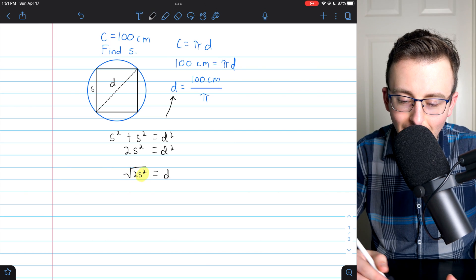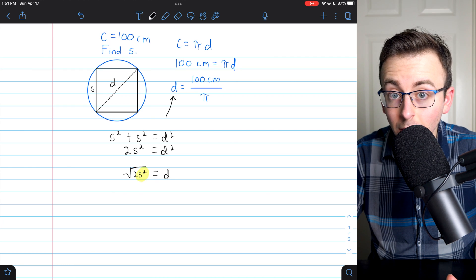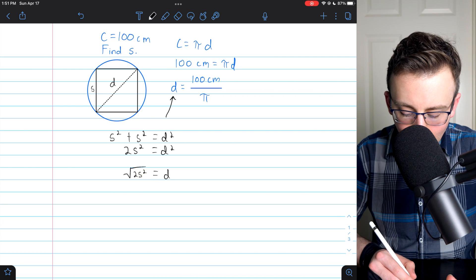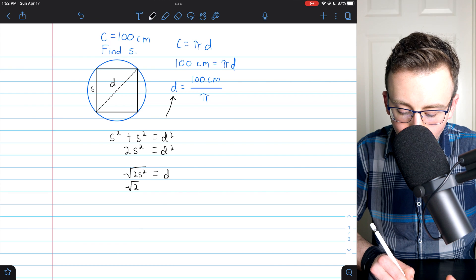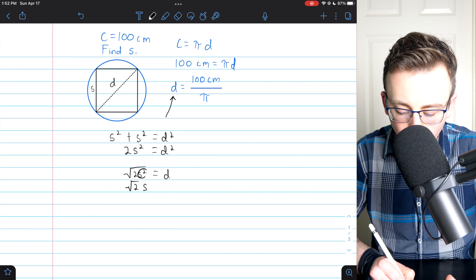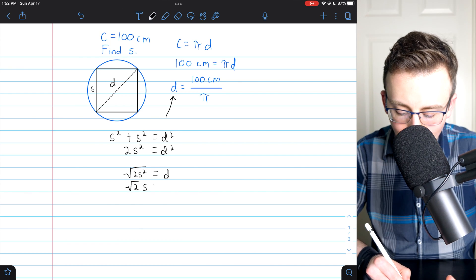We can just take the square root of that and leave 2 alone under the square root. So that's going to give us square root of 2 times s, because we took s squared out of the root, equals d.